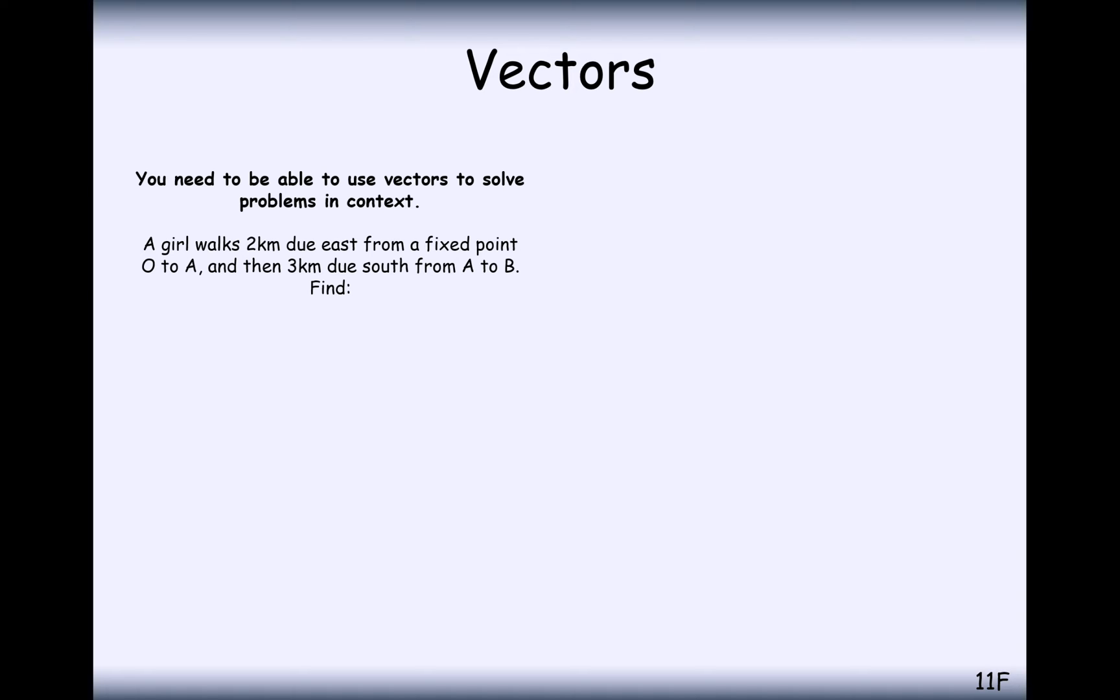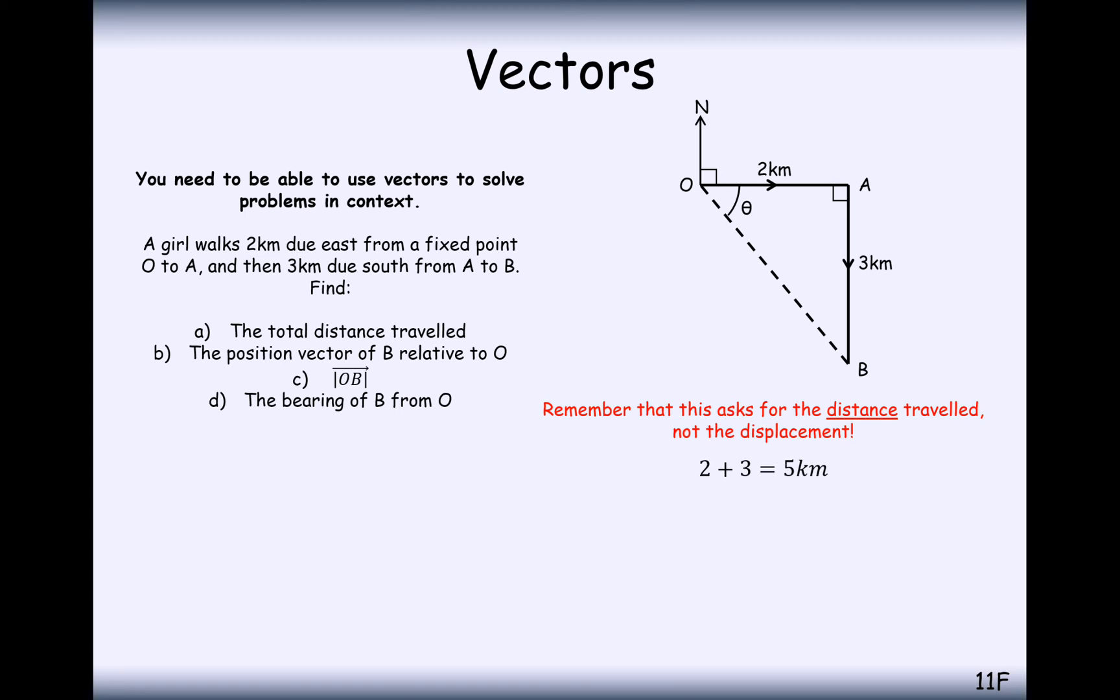A nice simple one to start with: a girl walks 2km due east to a fixed point O to A and then 3km due south after that. Find the total distance travelled, well that's just going to be 2km and 3km, that's 5km. Part B is the position vector of B relative to O, so that's just going to be, in terms of i and j, 2i minus 3j. So it's 2i minus 3j and in brackets we need kilometres at the end.